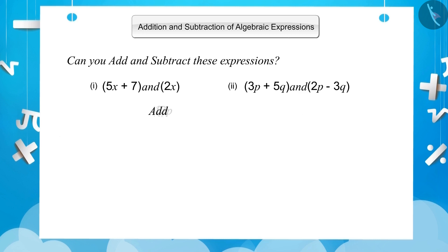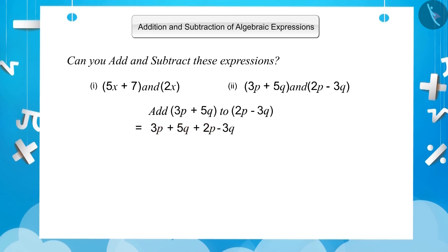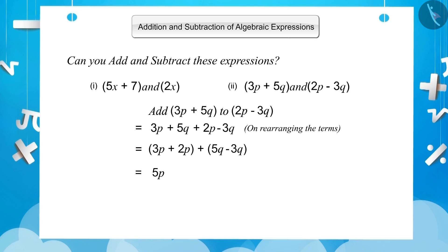Sum of 3p plus 5q and 2p minus 3q: 3p plus 5q plus 2p minus 3q. Here, 3p and 2p are like terms, and 5q and 3q are like terms, so we rearrange to get the like terms together: (3p plus 2p) plus (5q minus 3q). By combining the like terms, we get 5p plus 2q.